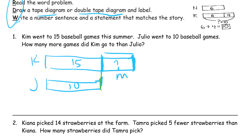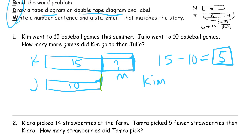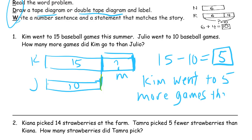How do we figure it out? It's 15 — the difference between 10 and 15. 15 minus 10, which equals 5. Kim went to 5 more games than Julio.